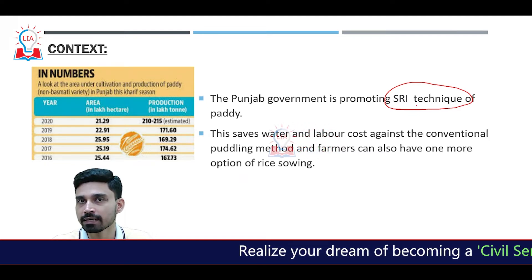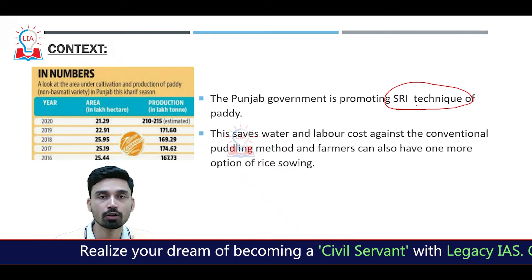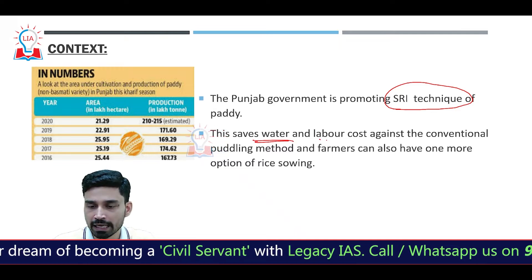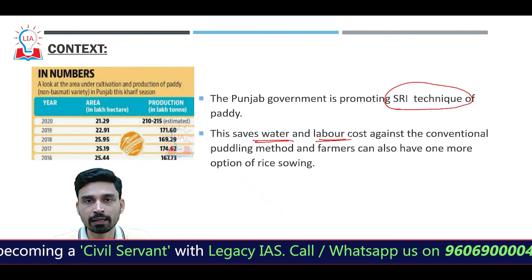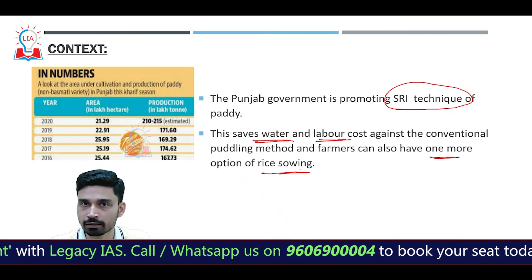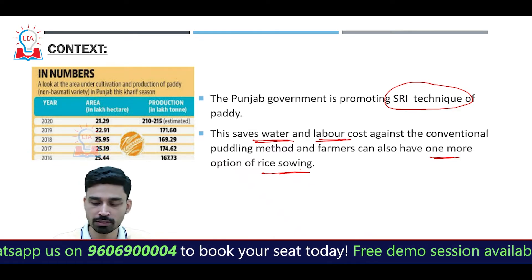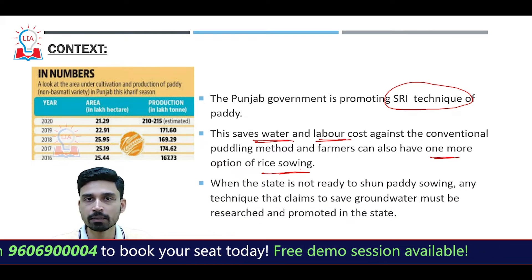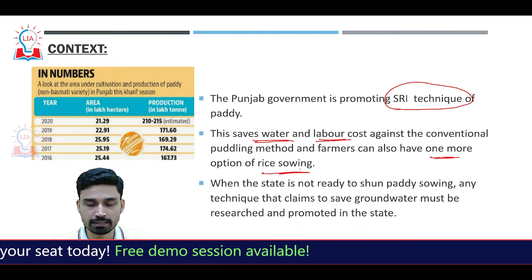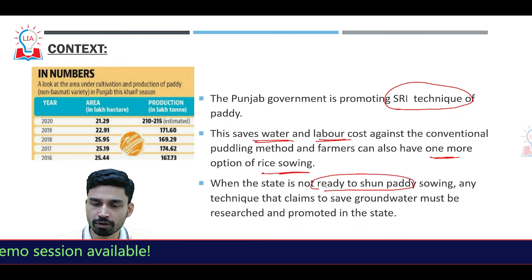The main advantage the SRI system offers compared to the conventional method is that it saves much more water as well as labor cost. This gives farmers one more option for rice sowing in a year — instead of one or two crops, farmers can sow two or three crops in a particular year if they move to the SRI method of rice cultivation.